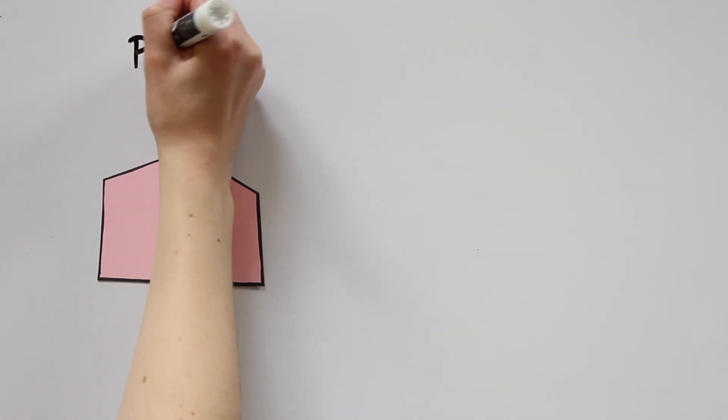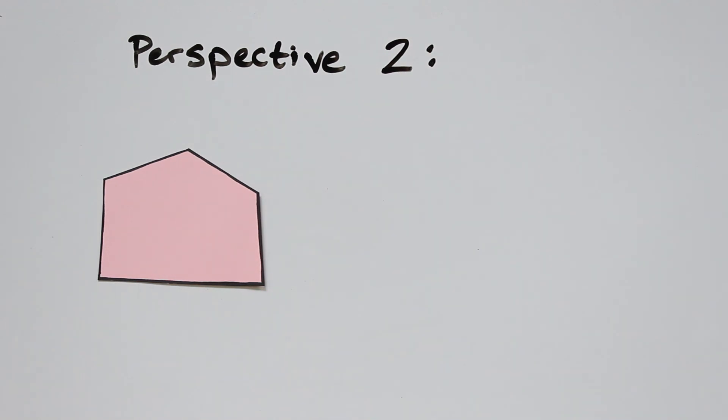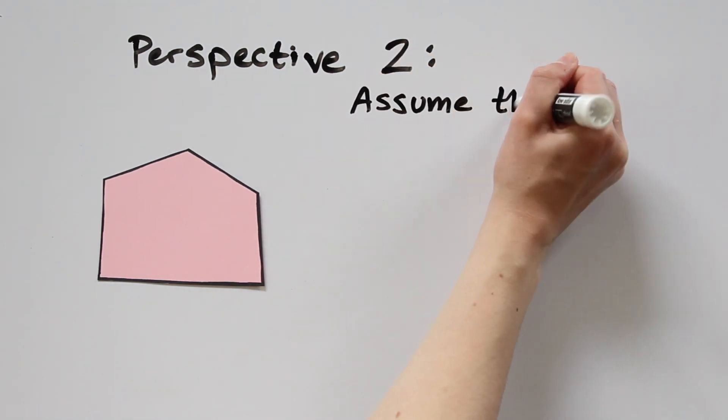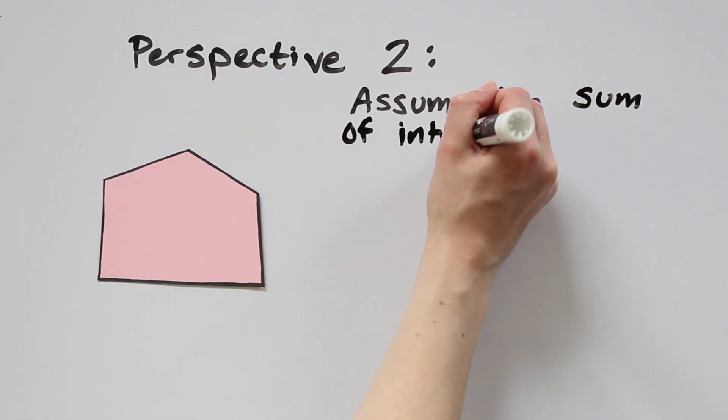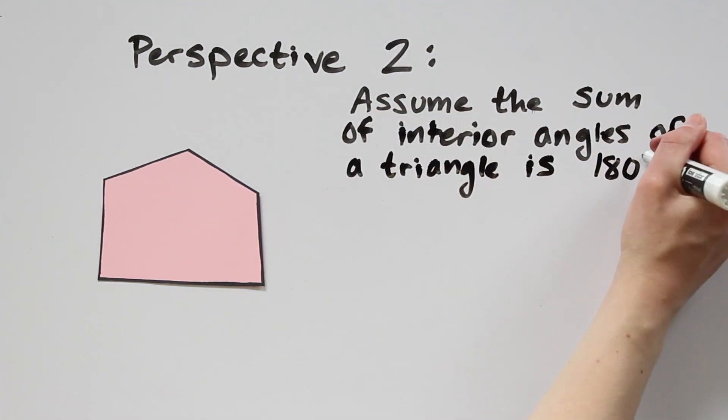But there's another way of thinking about this. Suppose that you didn't believe the sum of the exterior angles is 2 pi, but you're willing to accept the fact about triangles, that the sum of the interior angles is 180 degrees, or pi.